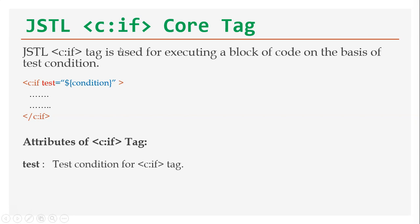The JSTL `c:if` tag is used for executing a block of code based on a test condition. In the syntax, the `c:if` opening tag is provided with a mandatory attribute called `test`, to which we provide a boolean condition. This condition evaluates to either true or false. If it evaluates to true, then the code block inside the `c:if` opening and closing tag will get executed.